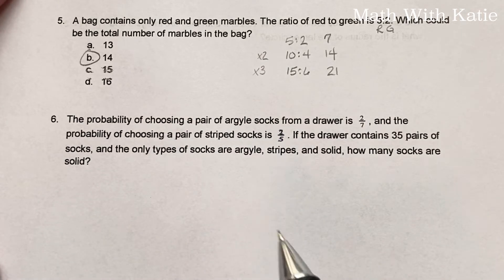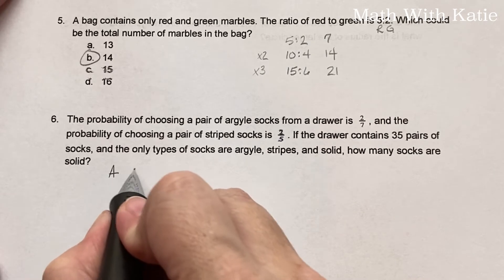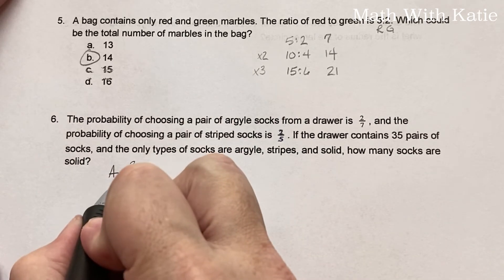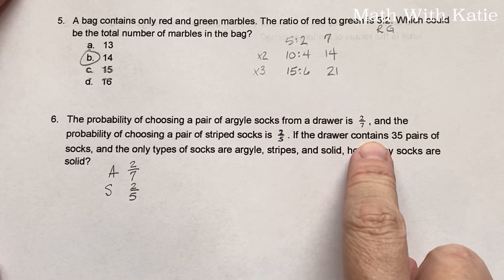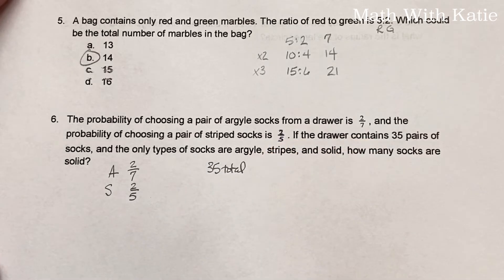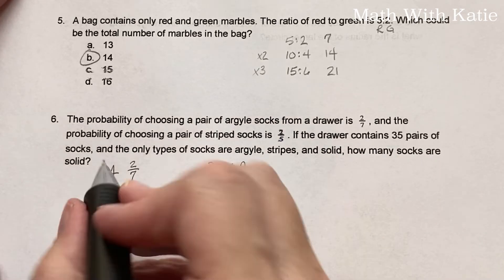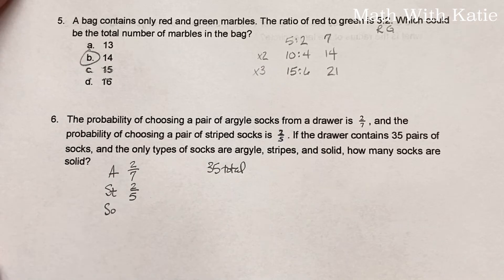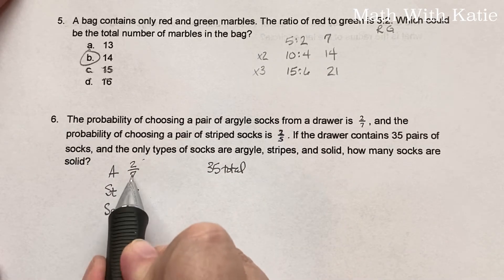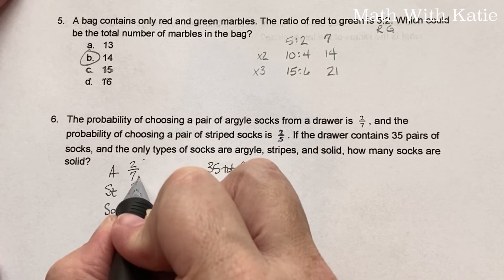The probability of choosing a pair of argyle socks from a drawer is 2/7. The probability of choosing a pair of striped socks is 2/5. If the drawer contains 35 pairs of socks, and the only types of socks are argyle, stripes, and solids, how many socks are solids? First, we need to get a common denominator here. So the common denominator will be 35, times 5 times 7.